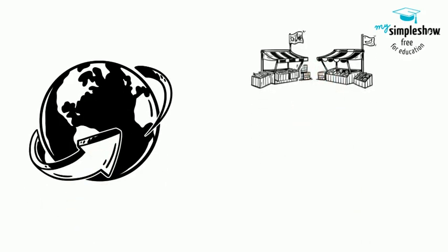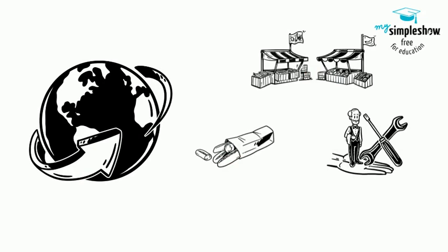Of course, in the real world, there are many different markets for goods and services and markets for many different types of labor. The circular flow diagram simplifies this to make the picture easier to grasp.